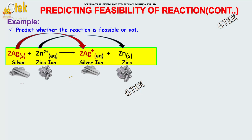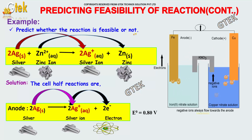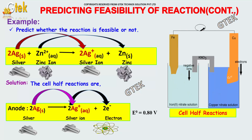Let's go with an example. We need to predict whether the reaction is feasible or not. We have silver plus zinc reacting, yielding silver ion plus zinc.